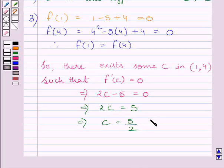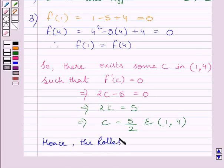Now, 5/2 belongs to open interval (1, 4). So, we get value of c = 5/2 and this value belongs to the open interval (1, 4). So, we can say, hence the Rolle's theorem is verified. This completes the session. Hope you understood the solution. Take care and have a nice day. Thank you.